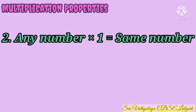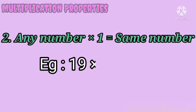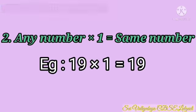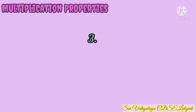Second property: the product of a number and 1 is always that number itself. It means any number multiplied by 1 is equal to the same number. For example, 19 into 1 is equal to 19.